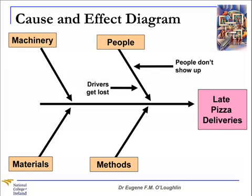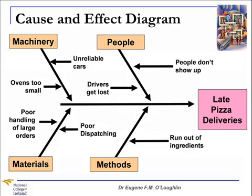Here we have a starting point. This diagram is taken from a small book called The Memory Jogger Part 2, a pocket guide of tools for continuous improvement and effective planning written by Michael Brassard and Diane Ritter, published by Goal QPC in 1994. We have our four main categories. Under people, I've identified two possible causes of late deliveries: people don't show up and drivers get lost. Under machinery, we have unreliable cars and ovens being too small. Under materials, poor handling of large orders and poor dispatching. Under methods, run out of ingredients.